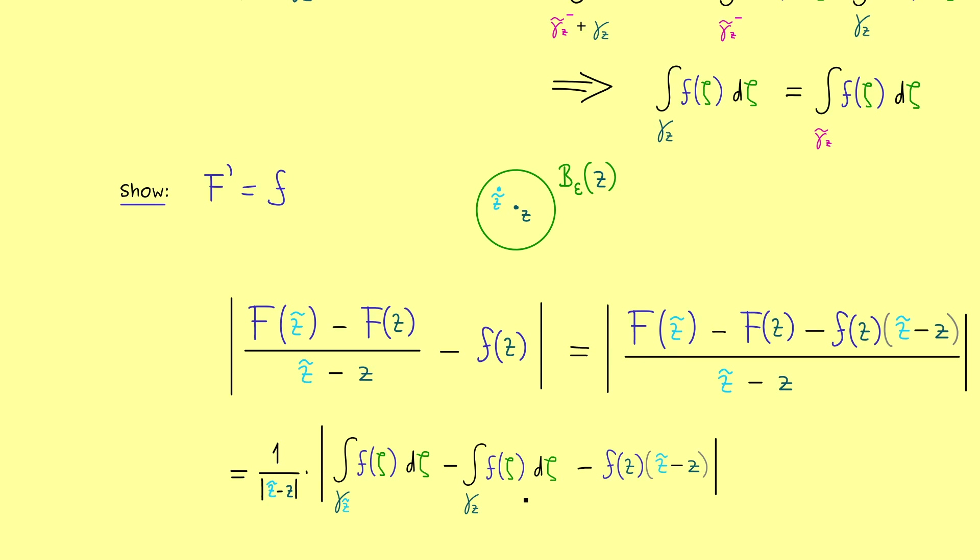In other words, here you see, we have the difference of two contour integrals over the same function. So I would say, let's visualize this in the picture above. So you see, here we have our first curve, gamma_z_tilde.